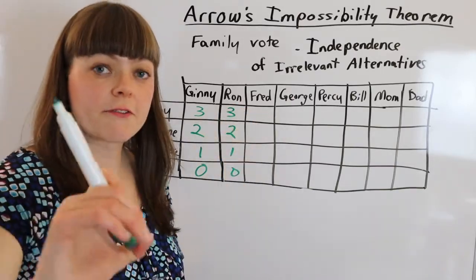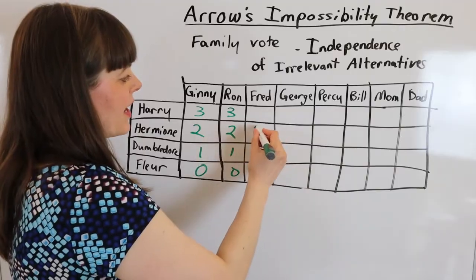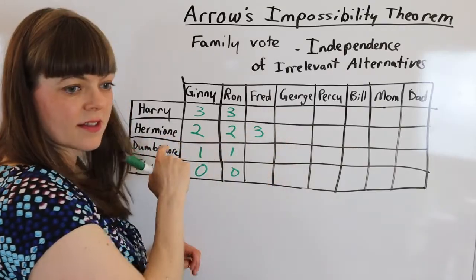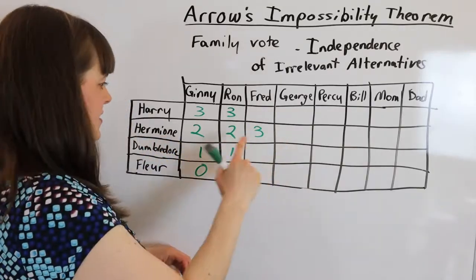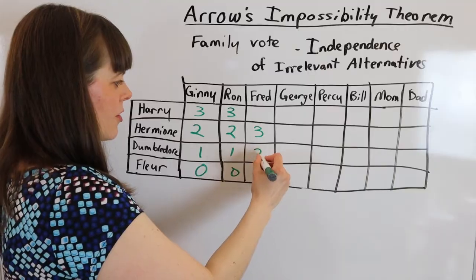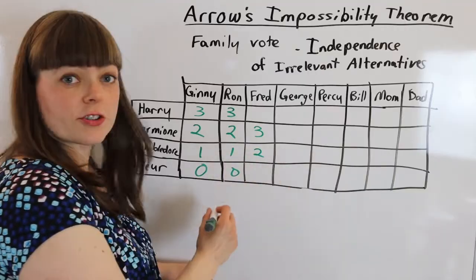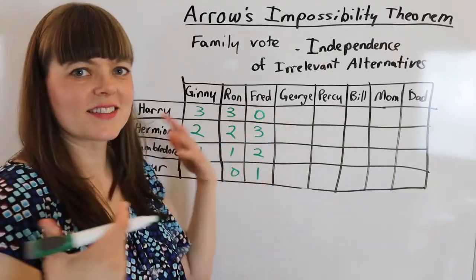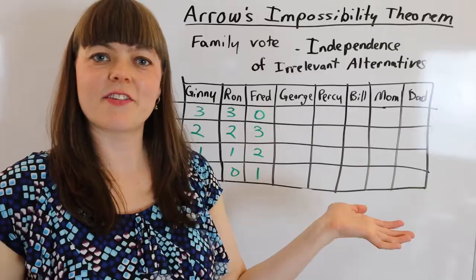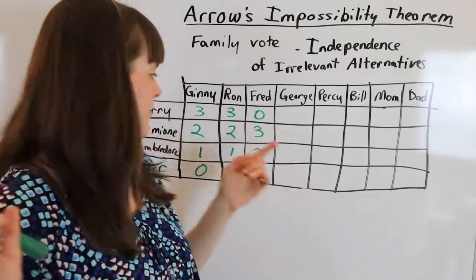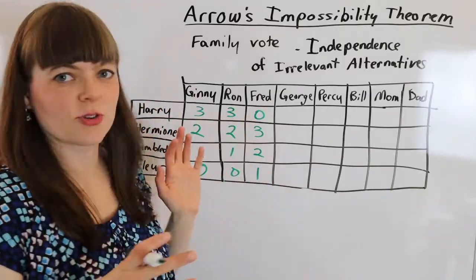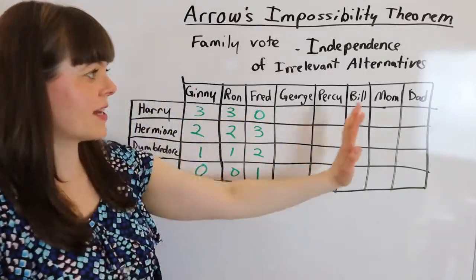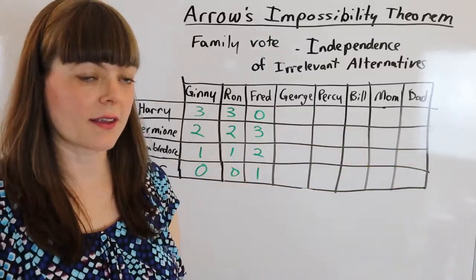Fred actually prefers Hermione — she is his first choice. His second choice is Dumbledore, his third choice is Fleur, and Fred has recently developed a distrust for Harry, so Harry is his last choice. Now I'm going to fill in the table with everybody's voting.